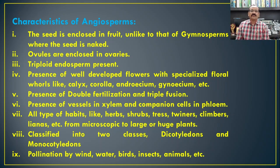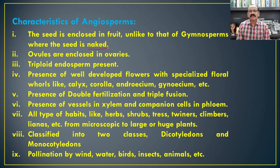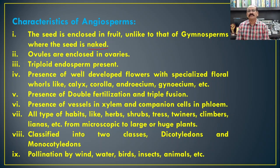If we see the characteristics of angiosperms among all other plants in the plant kingdom, we find that the seed is enclosed in fruit, unlike gymnosperms where the seed is naked. This indicates that whenever we see different fruits, those plants in which the seed is enclosed by the fruit come under angiosperms. But if the seed develops directly on the plant body and is naked, that will be a gymnosperm. On this basis, angiosperms are completely different from gymnosperms.